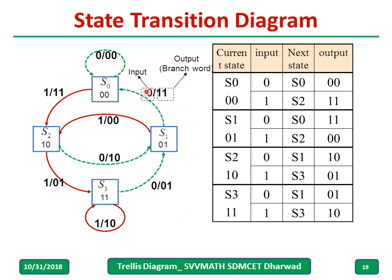The notation is: the value before the slash represents the input, and the value after the slash represents the output. For example, S3 corresponds to state 11. When input is 0 from state S3, the next state is S1 and the output is 01, as shown in the state transition diagram.